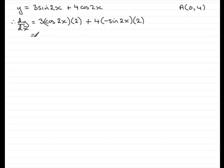Let's clean this up. We've got 3 times 2, which is 6, so we've got 6 cos 2x. And in this term, we've got minus 8 sine 2x. Okay, so that's the gradient of the tangent at any point on the curve C.